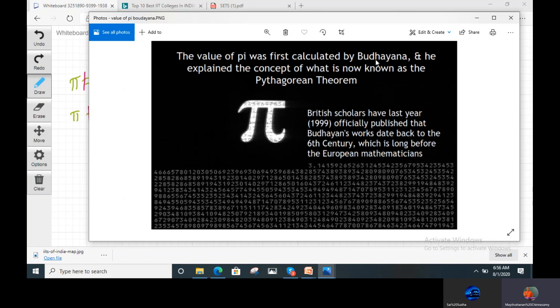The value of pi was first calculated by the Indian mathematician Bodhayana and explained the concept of what is known as Pythagorean theorem. A British scholar officially published that Bodhayana's work dates back to the 6th century, which is long before the European mathematicians.